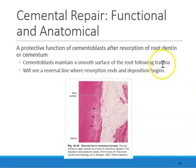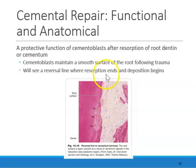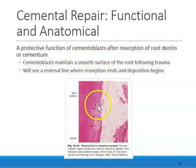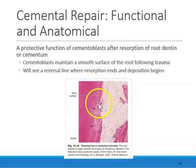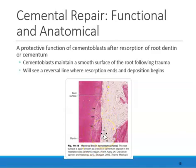Lastly, whenever there is trauma — a cavity, lots of pressure on the tooth, or if a tooth has hyper-erupted — cementoblasts will keep making cementum. What they're going to do is try to create a smooth surface on the root. If you look at the edges of the cementum, it is a smooth surface. That's what the cementum is trying to do — to maintain a smooth surface of the root whenever there's trauma to that tooth.